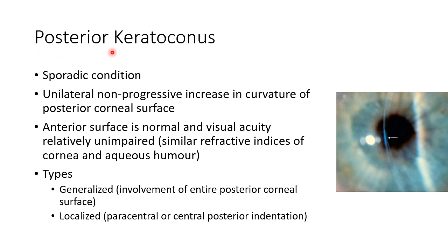Now let us discuss about posterior keratoconus. It is a sporadic condition in which there is unilateral non-progressive increase in curvature of the posterior corneal surface. The anterior surface is normal and visual acuity is relatively unimpaired, because of the similar refractive indices of cornea and aqueous humor. There are two types: the first is generalized, involving the entire posterior corneal surface, and the second is localized posterior keratoconus, with paracentral or central posterior indentation, as seen in this picture.